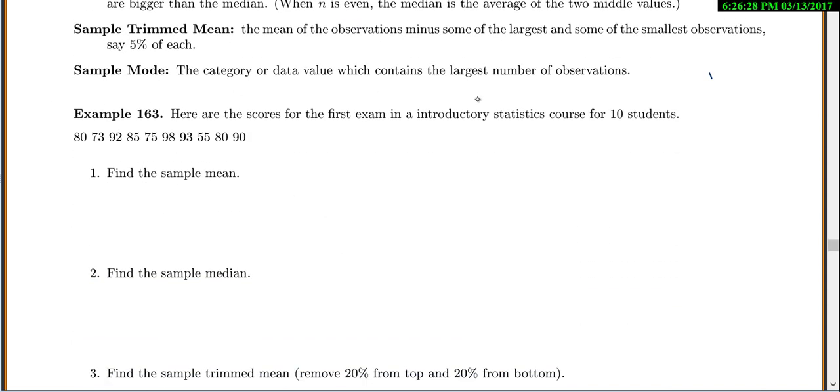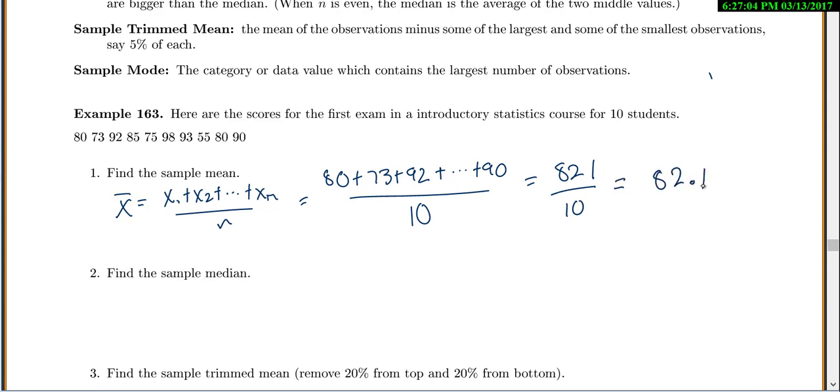So let's try this. We have scores from a first exam for ten students. Here are all of our scores. Let's find the sample mean. All we have to do is add up all the x's and divide by how many there are. In our case, we're going to have 80 plus 73 plus 92 plus all the way up to 90 divided by ten. If I add them all up, I get 821 divided by ten, we're at 82.1.